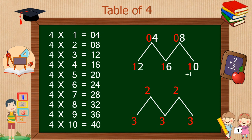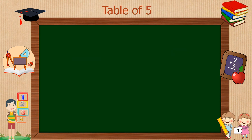For 10, write down just 0 and carry 1. Now add 1 plus 1, which is 2. Repeat the table of 2 in the second pattern also: 2, 4, 6, 8, and 10 — write down 0 only and carry 1. So 3 plus 1 is 4. Our table of 4 is ready.